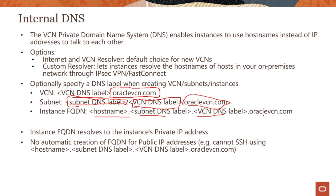The instance fully qualified domain name resolves to the instance's private IP address. In previous examples we had a local peering gateway and were pinging instances using their private IP addresses — instead we could have used the instance fully qualified domain names and pinged those instances using that. One thing to really keep in mind: there is no fully qualified domain name for public IP addresses. So if you want to SSH with hostname dot subnet name dot VCN name dot oraclevcn.com, that feature is not supported. It's on the roadmap, but right now the instance fully qualified domain name resolves only to the instance's private IP address.